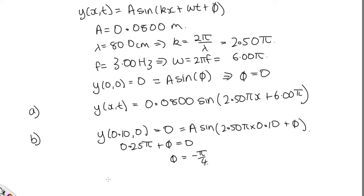And so substituting in, we have y of x and t. Most of it hasn't changed: 0.0800 sine 2.50 pi x plus 6.00 pi t. But now we subtract off this 0.250 pi. And that's the answer to this question, and that's the end of the lecture.